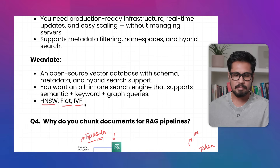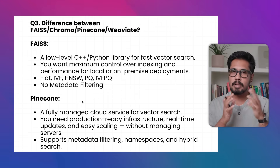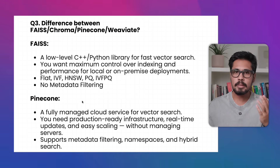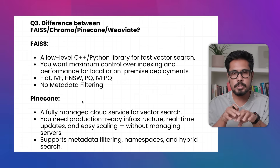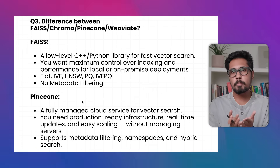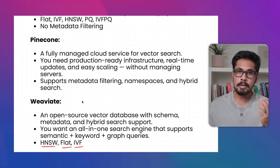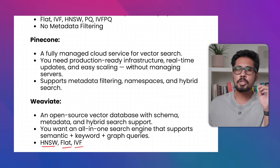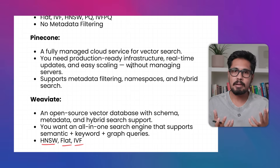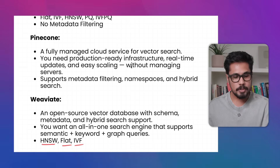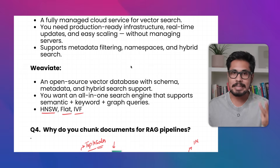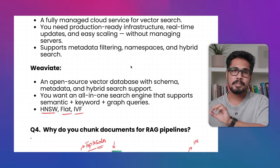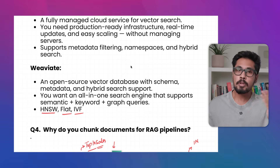FAISS and Chroma can be installed in Python locally. If you want metadata-based filtering plus semantic search, Pinecone is the best option — it offers a fully managed cloud service for vector search, production-ready infrastructure, real-time updates, and easy scaling. If you want open source with all three — metadata, graph-based searching, and semantic search — Weaviate is another option.